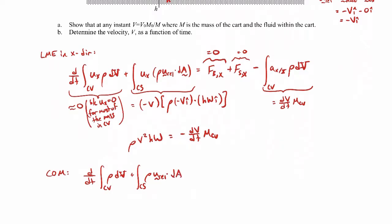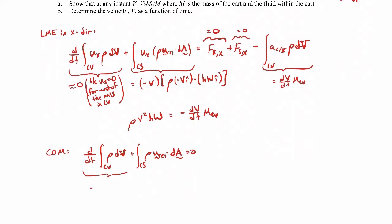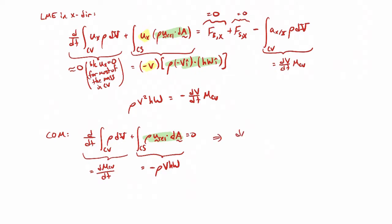Applying conservation of mass to the same control volume: the first term is the time rate of change of mass in the control volume; the second is the mass flow rate through the control surface. Reusing what we evaluated above, the mass flow rate is minus rho v h w. This gives us that the time rate of change of mass in the control volume equals rho v h w.